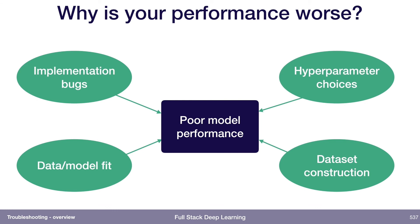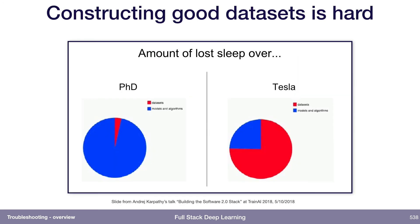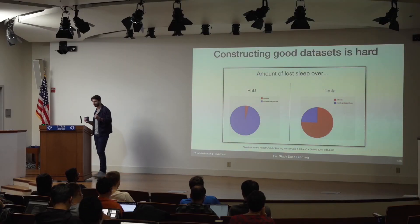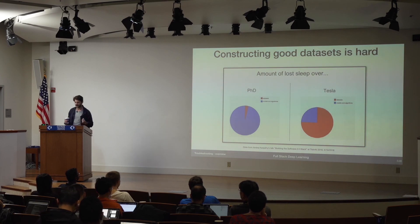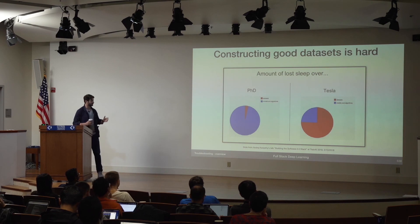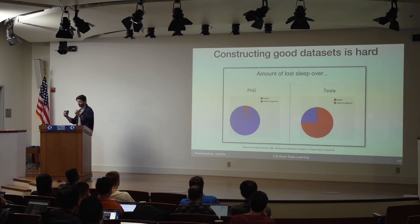Poor model performance could be caused by nothing that has to do with your model at all — it could just be the dataset construction. This is a slide from Andrej Karpathy that describes the amount of effort and angst that goes into data versus models in a PhD versus at Tesla. The whole pie chart is models during your PhD, because you're thinking about how do we make this model?